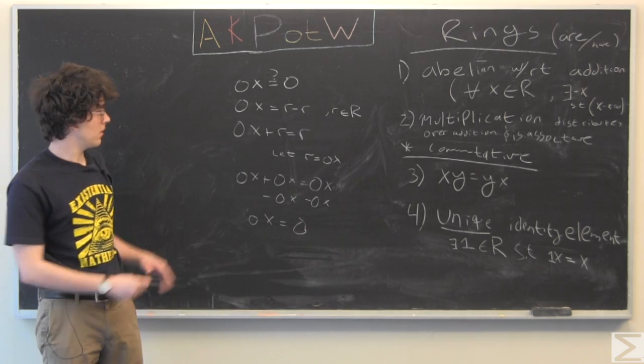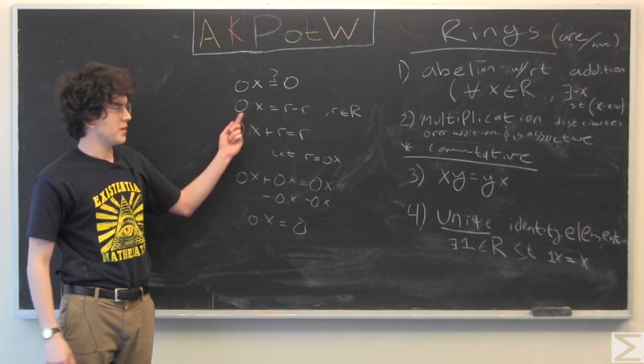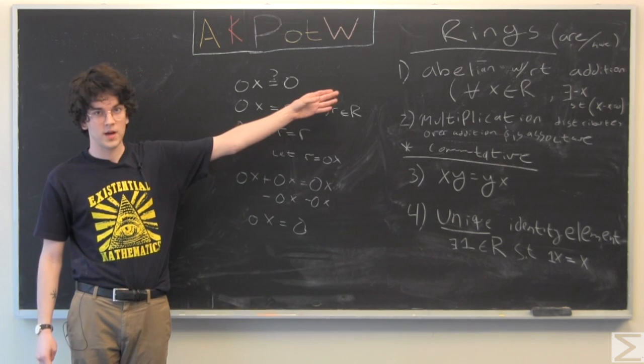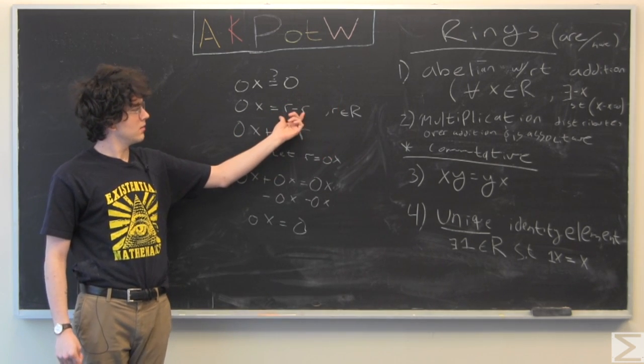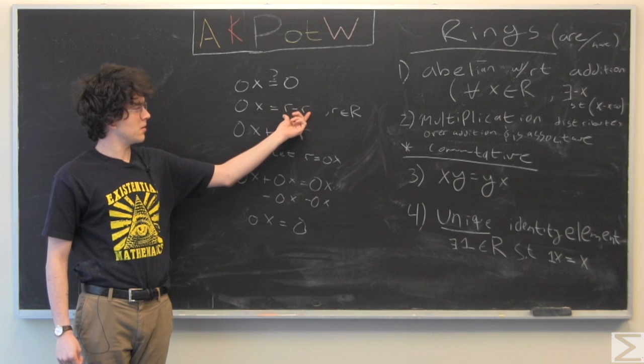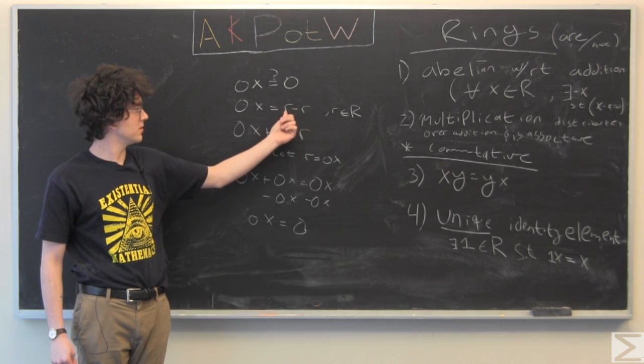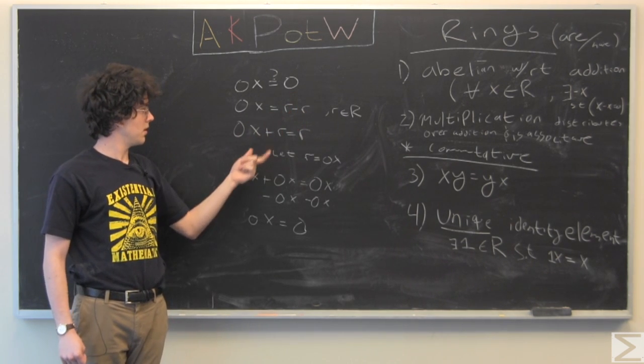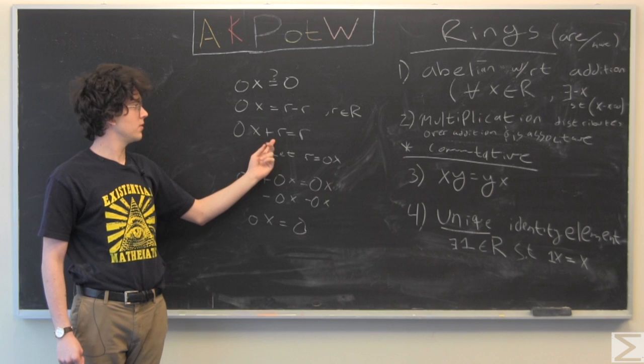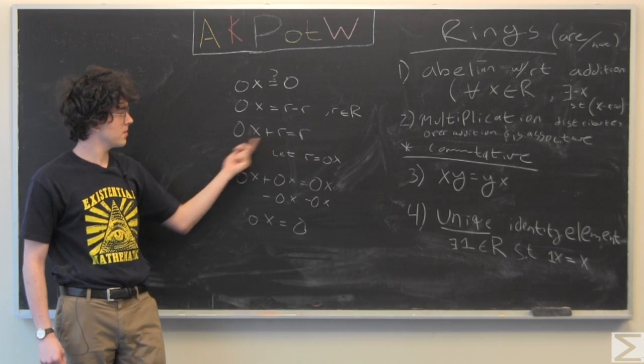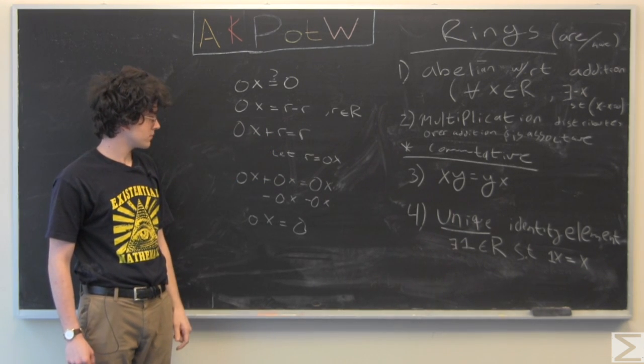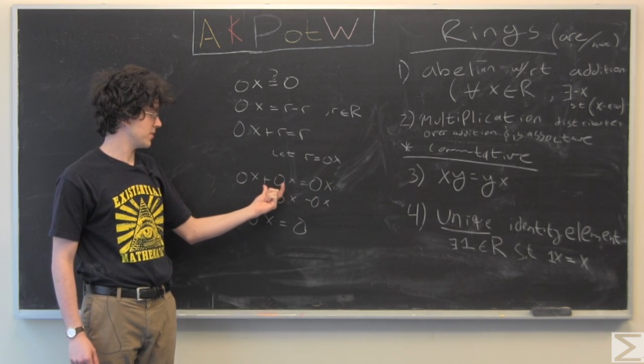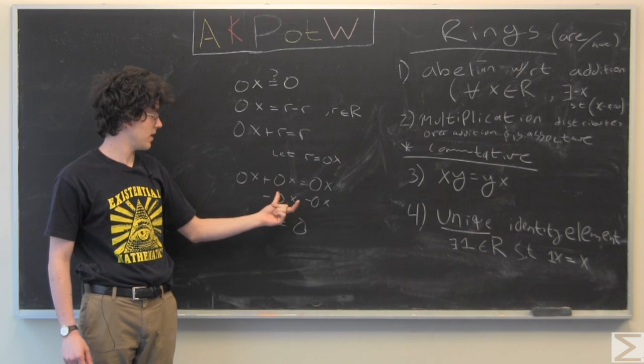So, here we have 0x equals 0, and we know from axiom 1 that any R has a negative R, so we can do R minus R equals 0, substitute that in, add R over to one side. It's just simple algebra. Although, we're going to let R equal 0x, and so 0x plus 0x equals 0x.